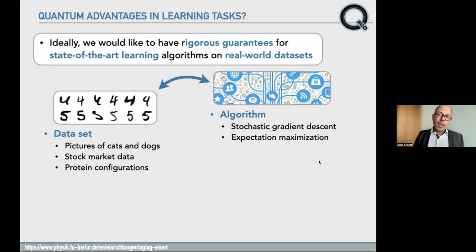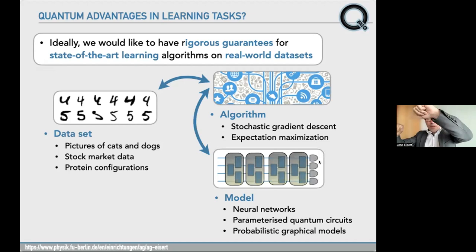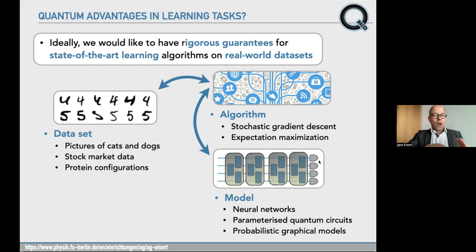We need an algorithm of a type — say stochastic gradient descent or expectation maximization — that deals with real-world data in a meaningful fashion. We need a model like neural networks, as they're ubiquitous in classical machine learning, or parameterized quantum circuits that I've already mentioned when talking about variational quantum eigensolvers — circuits with certain families of knobs that are tuned in the course of the algorithm — or probabilistic graphical models. For that setting, one would like to see a quantum advantage of the quantum-assisted algorithm over classical.